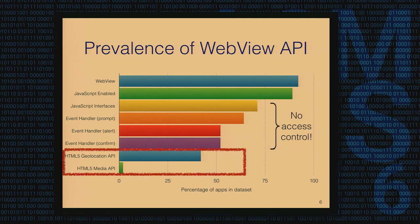Looking at the use of HTML5 APIs, those are not used as commonly as the JavaScript bridges. The operating system in this case does provide origin information to the application code, so you can do access control if you want. But if we're introducing an access control system, there's no reason not to include HTML5 APIs as well — if you don't, it's going to be ad hoc and burdensome for developers. So we need uniformity here.